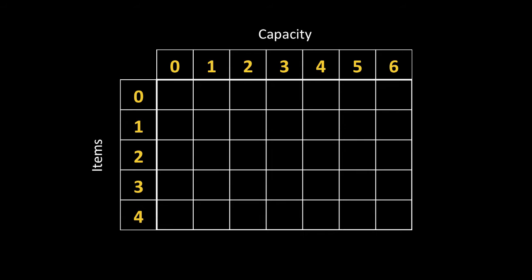We're going to be using dynamic programming to build up a two-dimensional array which will allow us to easily query our answer at the end. We're going to be working with the second test case in the sample input. Each row represents adding in a different element and each column represents a different capacity. The reason we only go up to six in this case is because our knapsack is just slightly larger than six. When we have finished populating this grid, each cell is going to tell us what the maximum value we can obtain given some capacity and a subset of the items. This will all become more clear as we run through this example.